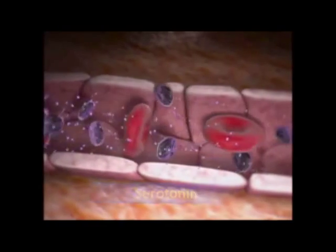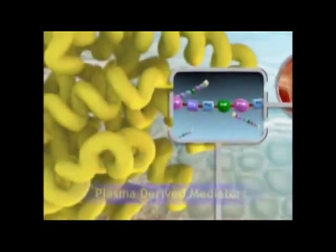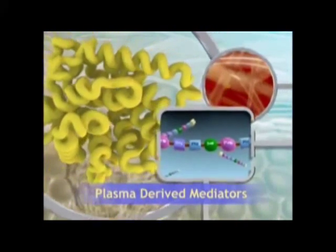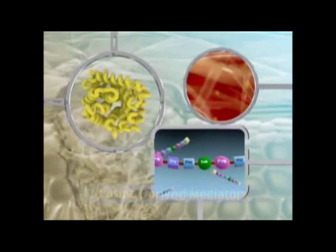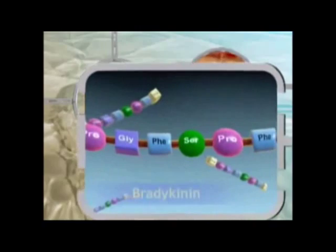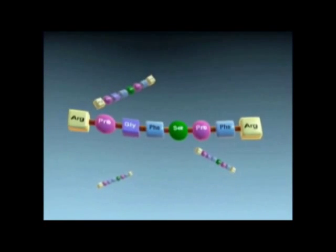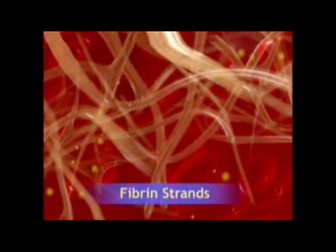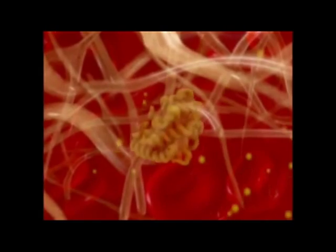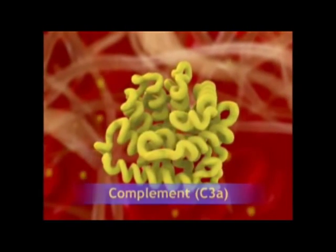Histamine is released in response to a variety of stimuli and causes dilation and increased permeability of capillaries. Serotonin, another cell-derived mediator, performs similar actions. The three major plasma-derived mediators are present in the plasma in precursor forms that must be activated, usually by a series of proteolytic enzymes. The kinins increase capillary permeability and stimulate pain receptors. The clotting system traps exudates, microorganisms, and foreign bodies. The complement cascade causes vasodilation, promotes leukocyte chemotaxis, and augments phagocytosis.